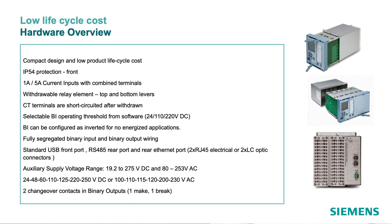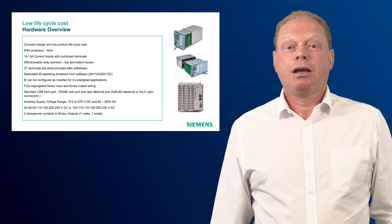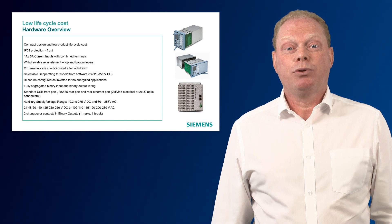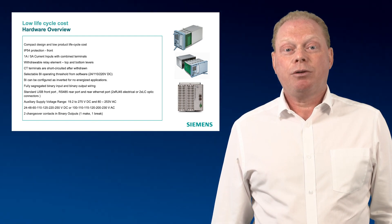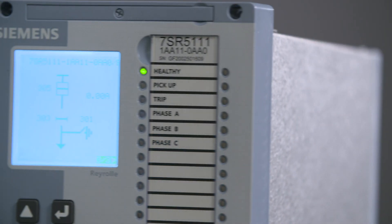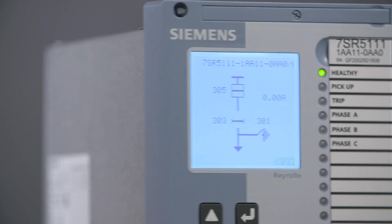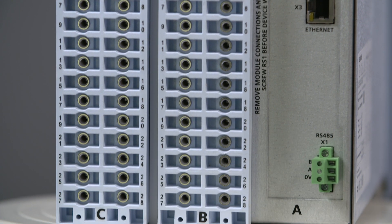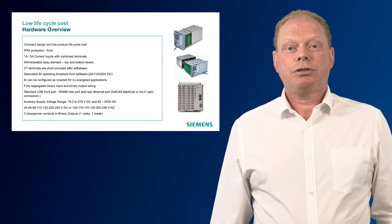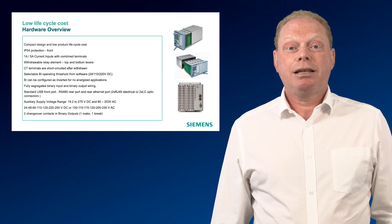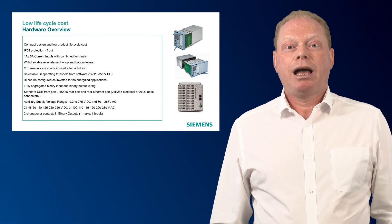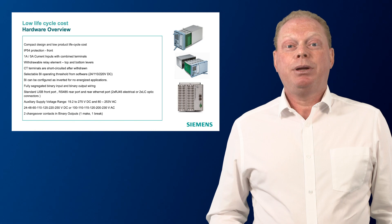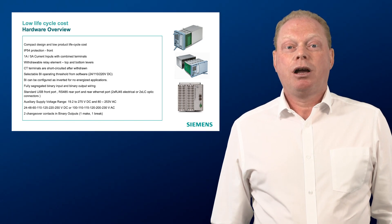Let's take a closer look at the RARO5 hardware. The product is available in two sizes: size 6 width and size 12 width with a standard 4U height. The case size is determined by the number of inputs and outputs required, with a maximum of 39 binary inputs and 20 binary outputs. The current and voltage transformer inputs, the power supply and the binary inputs cover the full range so there are no ordering options. In addition, all of the protection functions, the IEC 61850 and Modbus TCP Ethernet communications, and the IEC 103, DNP3 and Modbus serial protocols are provided as standard.